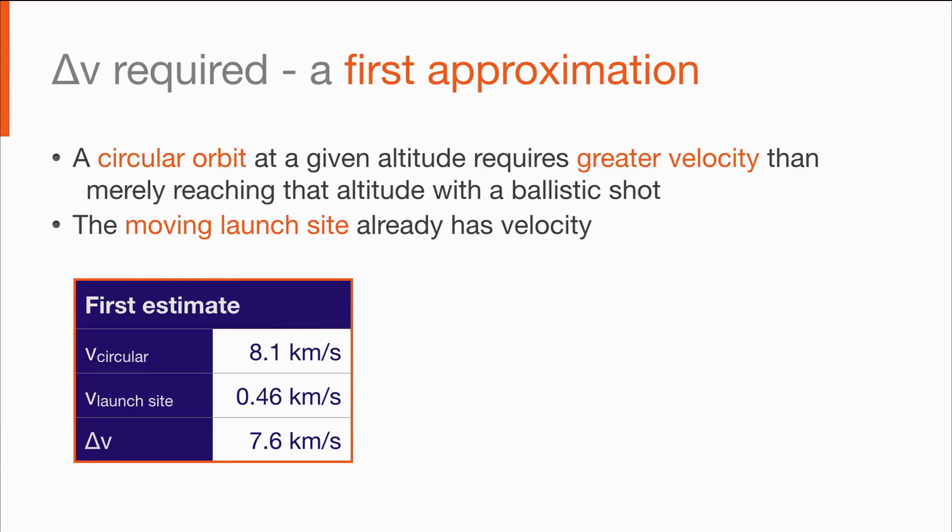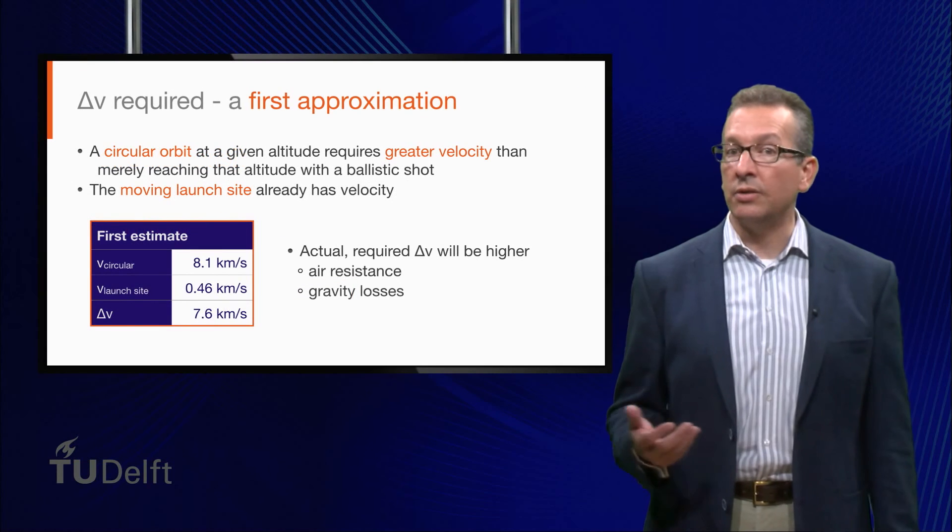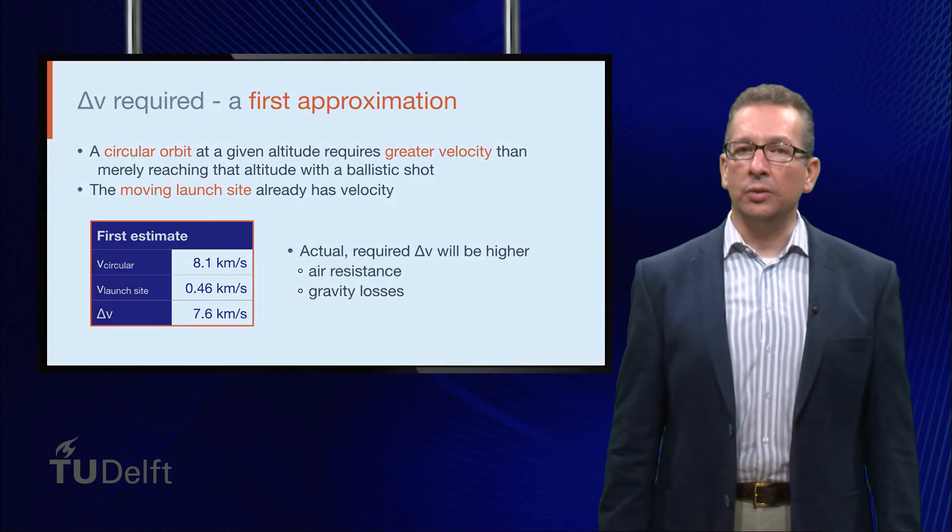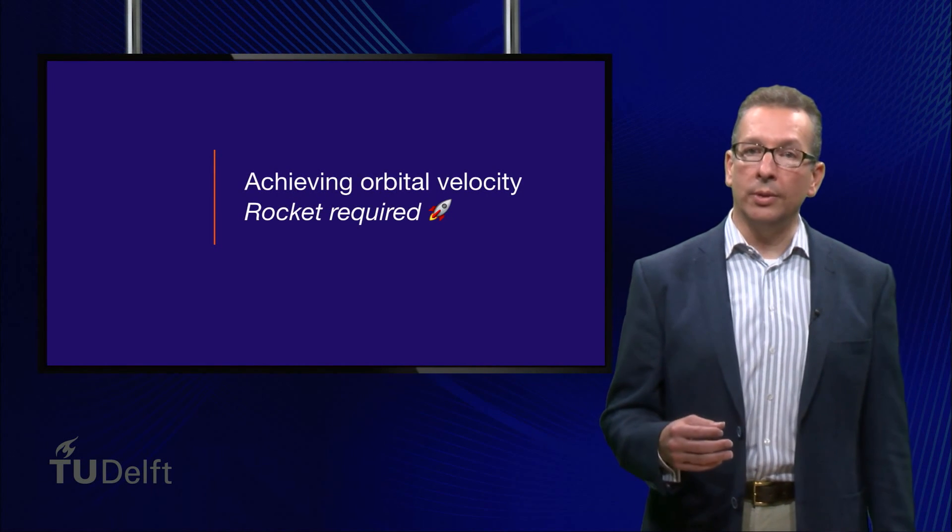This required change in velocity is called the delta V. Once again, this delta V is a first, rough approximation. The actual delta V required will be higher. We have to overcome a number of forces, such as air resistance and gravity, among other things.